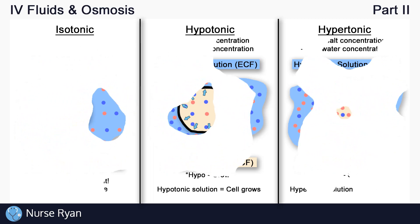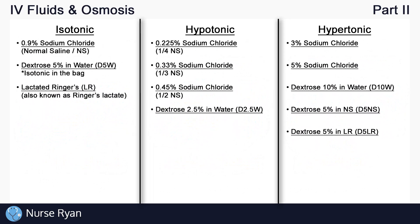Let's go over some of the common specific IV solutions. One of the most common isotonic solutions is 0.9% sodium chloride, also known as normal saline or NS. Because normal saline is an isotonic solution, it will not cause cells to grow or shrink — its salt concentration is just right to match that of the cells. If you look at the hypotonic solutions, you'll see other concentrations of sodium chloride, but their percentages are all lower than 0.9%. And on the right for hypertonic solutions, they're all higher than 0.9%, because normal saline is just right — it's equal, it's isotonic.